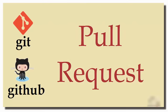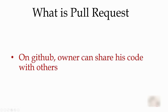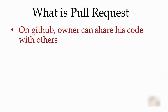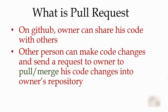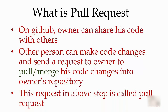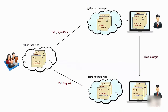In this tutorial we are going to see what is a pull request on GitHub. On GitHub, an owner can share his code with others. Another person can look at the code and make changes to fix a bug or add an enhancement, then send a request to the owner to pull or merge his code changes into the owner's repository. This request is called a pull request.